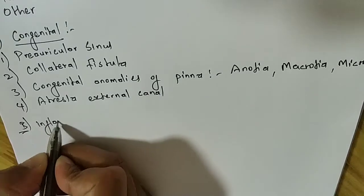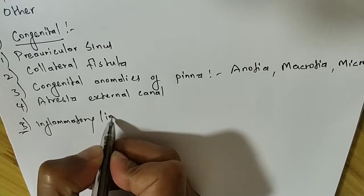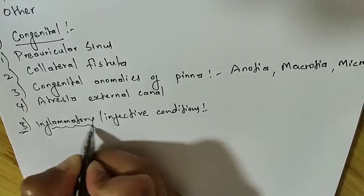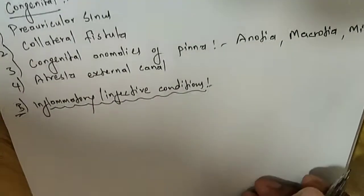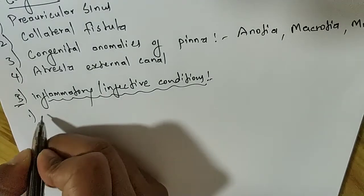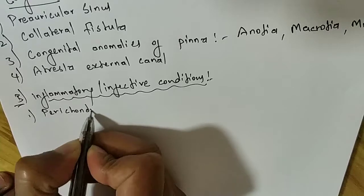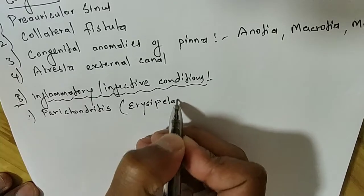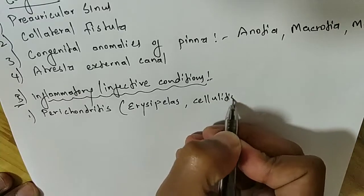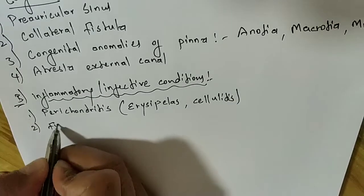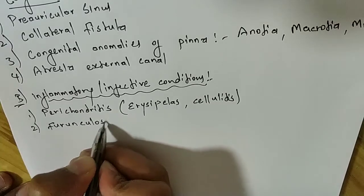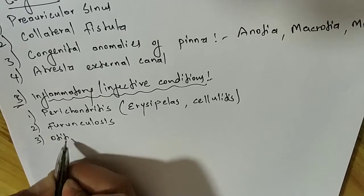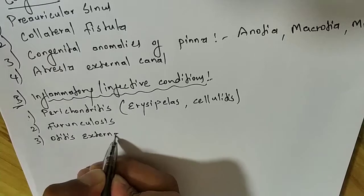The second condition is inflammatory or infective. Under this, the following diseases come: perichondritis, which includes erysipelas and cellulitis; furunculosis; and otitis externa.